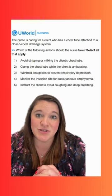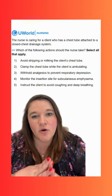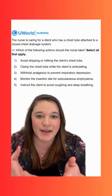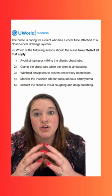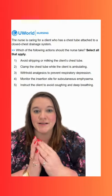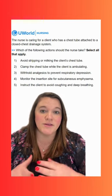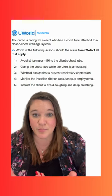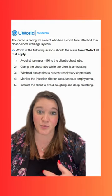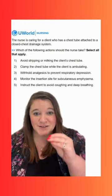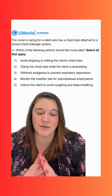Option three says to withhold analgesics to prevent respiratory depression. This is an incorrect option. We know that opioids can cause respiratory depression, but those aren't the only analgesics available — we can use NSAIDs and some other things as well. When we experience pain, we don't want to take deep breaths, and when we're not taking deep breaths, we get atelectasis and we're at increased risk for pneumonia. So we definitely want to encourage anything to promote deep breaths — an incentive spirometer would be great, but also making sure pain is controlled. When our pain is controlled, we're able to take deeper breaths. Additionally, that chest tube insertion site may be painful, so we want to definitely manage pain appropriately.